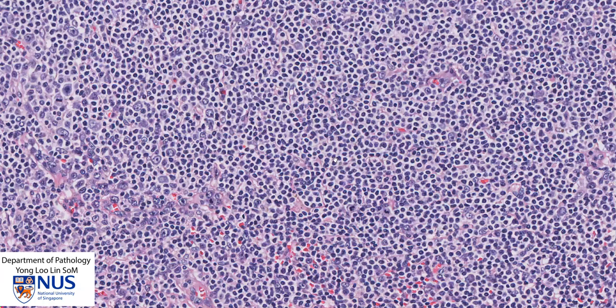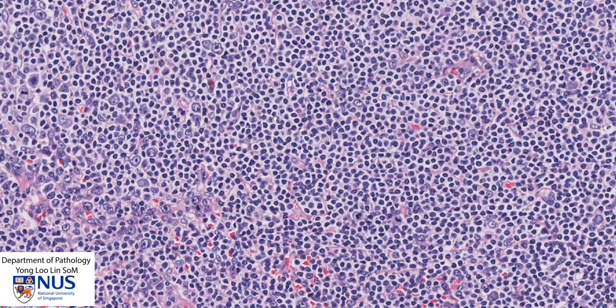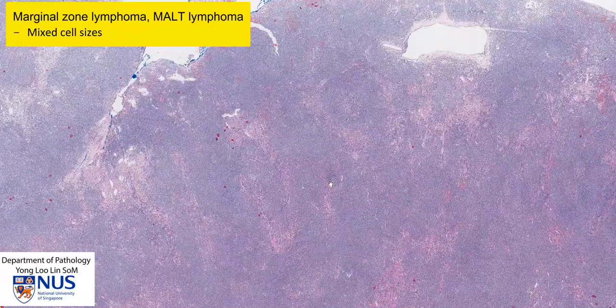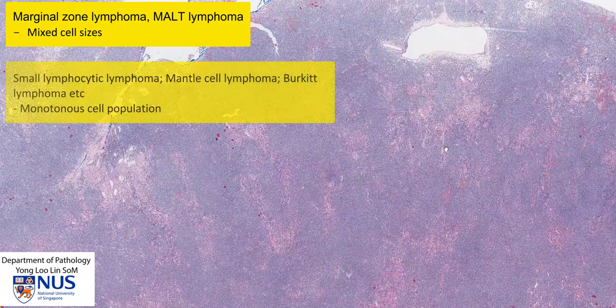We can see that the lymphocytes are quite variable in size. We have many small lymphocytes, some slightly larger medium-sized lymphocytes, and occasional even larger lymphocytes. So this population has a heterogeneous appearance comprised of lymphocytes of varying sizes. Marginal zone lymphoma, or MALT lymphoma, is a low-grade lymphoma with this classical mixed lymphoid population appearance. In many other B-cell lymphomas, such as small lymphocytic lymphoma or mantle cell lymphoma, the lymphocytes tend to be more similar to each other in size. However, in marginal zone lymphoma, there is a greater variation in size, with generally small lymphocytes predominating.